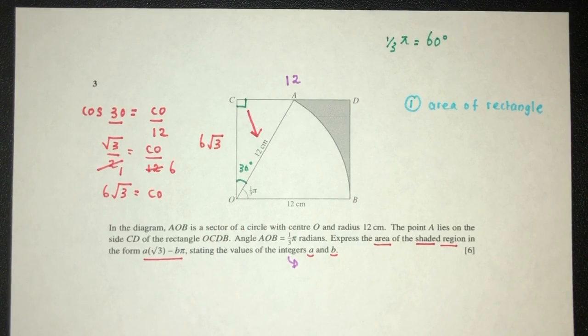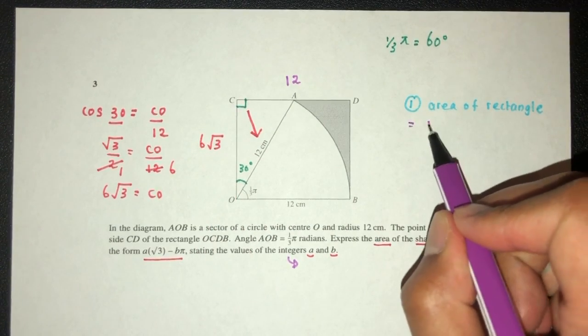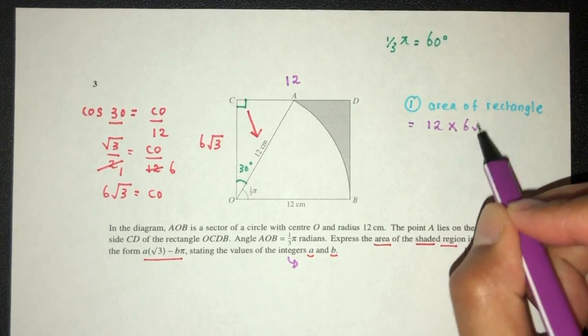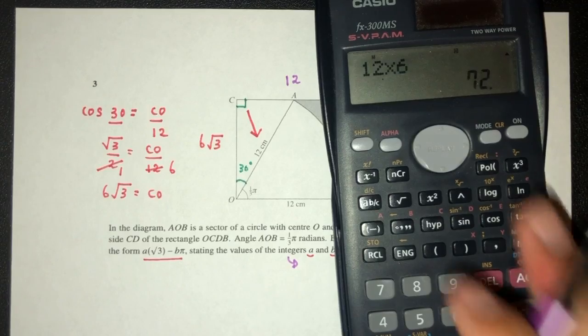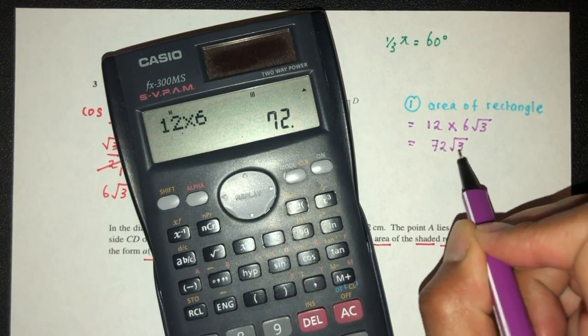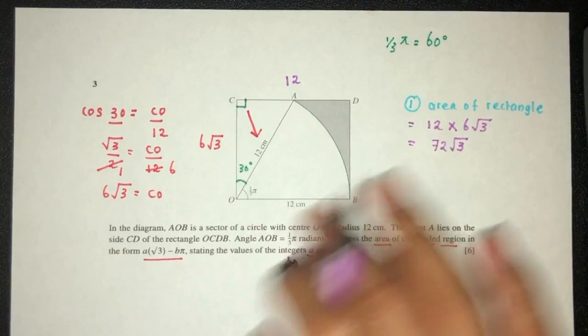So now we can find the area of the rectangle. That should be length times width. So 6 times 12 will be 72. Let's check. It is 72 root 3 will be the area of the whole thing.